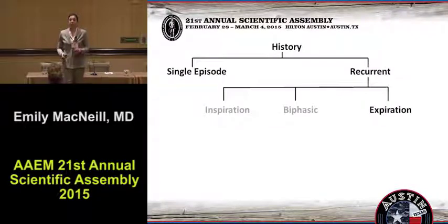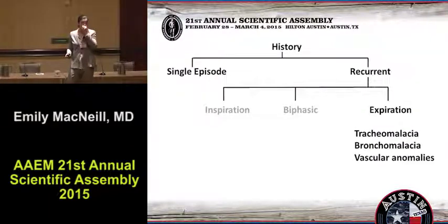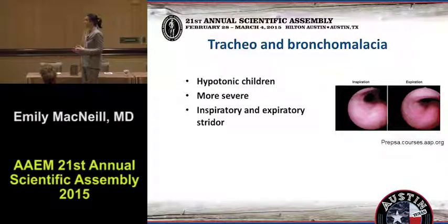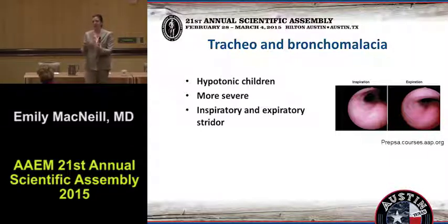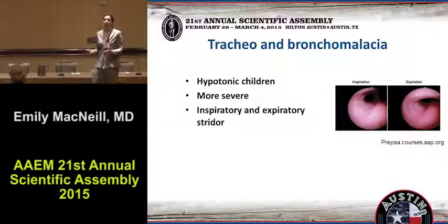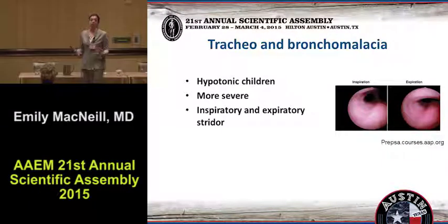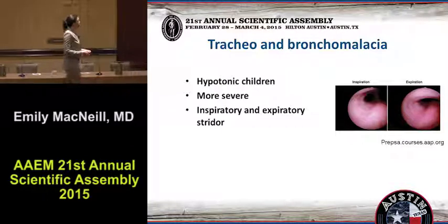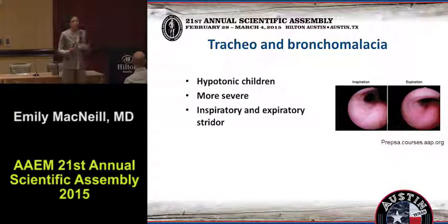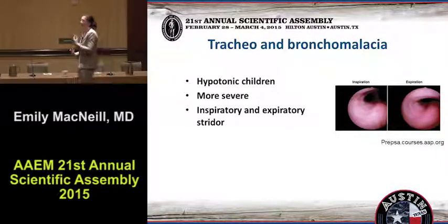That leads to our last one: expiratory. These are tracheomalacia and bronchomalacia, as well as vascular rings — pretty rare. Tracheomalacia: the picture on the left is during inspiration and you can see the airway collapse during expiration. The good news is that this child is going to be known to have this problem before they even see you. These kids have a lot of other issues — they could be hypotonic, they have other congenital abnormalities. It can cause a little bit of inspiratory stridor, depending on how high your weakened airway is.